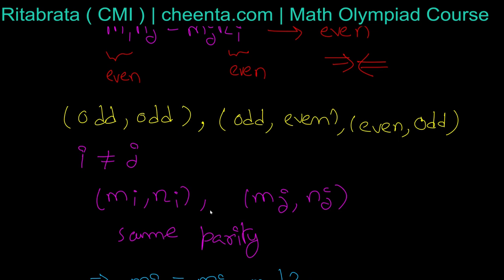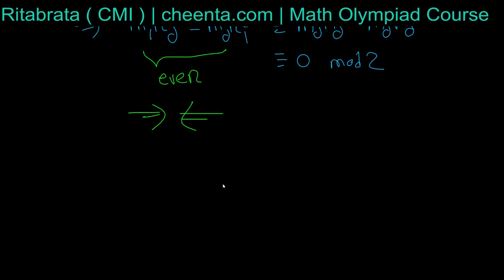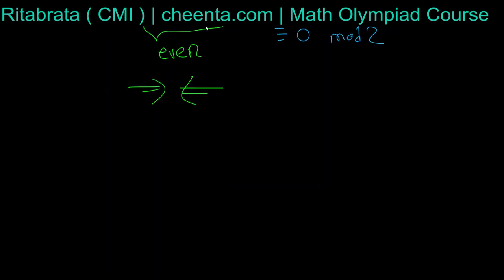So from that, even if an (odd, odd) or (odd, even) or (even, odd) pair occurs, it can occur at most once. No parity can repeat among the (mᵢ, nᵢ). So r can be at most 3, because we can have one (odd, odd) pair, one (odd, even) pair, and one (even, odd) pair. For r ≥ 4, we would need one more pair, but it can be neither (odd, odd) nor (odd, even) nor (even, odd), and it also can never be (even, even).